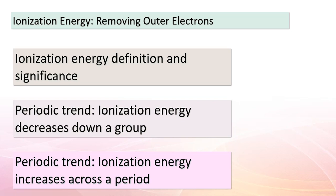Ionization energy measures the energy required to remove an electron from an atom — a property holding crucial information about an element's reactivity. Moving down a group, ionization energy decreases because the outermost electrons are farther from the nucleus and experience greater electron shielding, making them easier to remove. As we progress across a period, ionization energy increases — the electrons are closer to the nucleus and the greater positive charge makes them more difficult to remove. These trends are closely linked to atomic size and electron shielding.